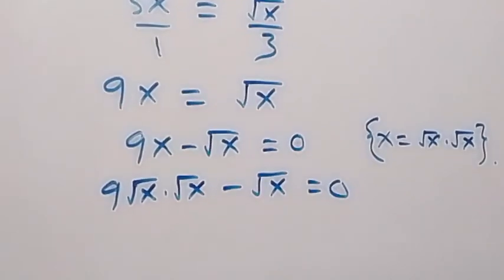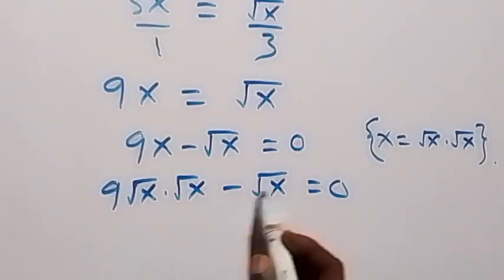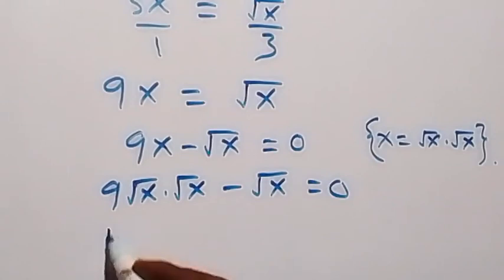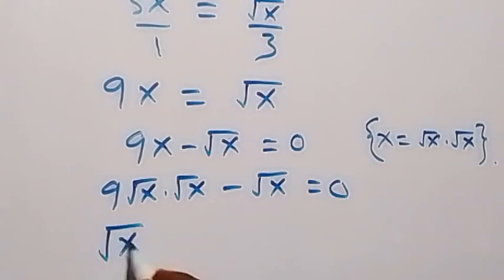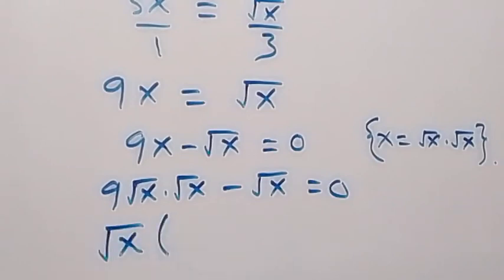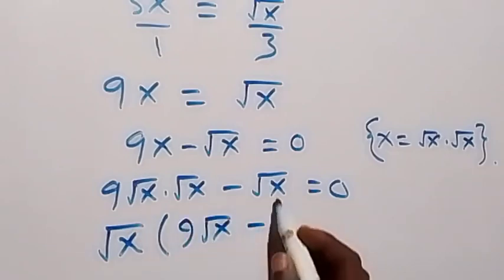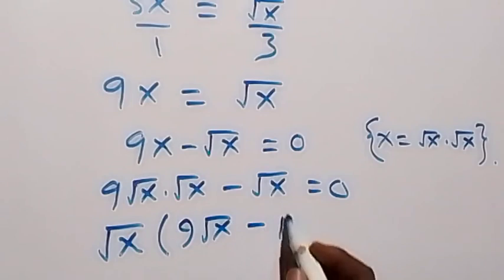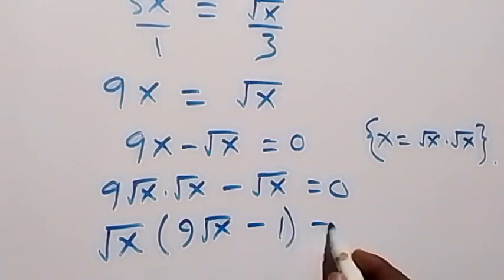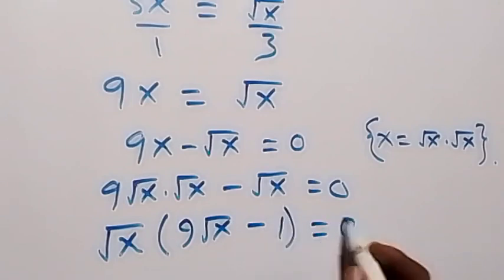Then next, we have root x as a common factor, so when we factor that out, we get root x into bracket: what is left here will be 9 root x, then minus 1, equals to 0.